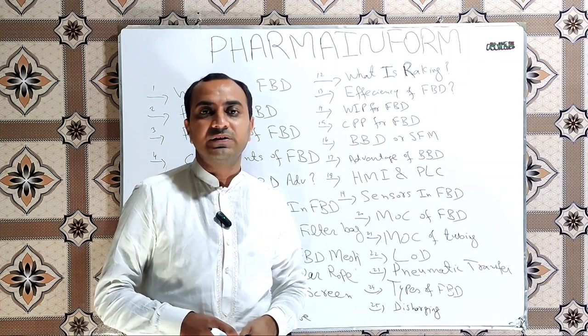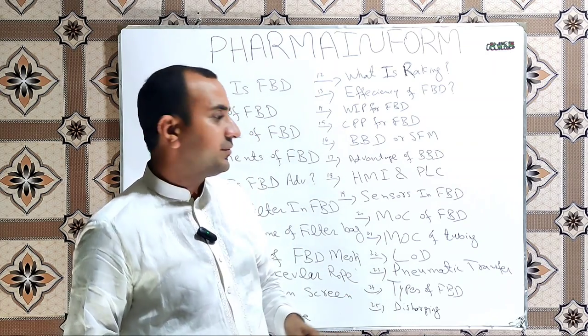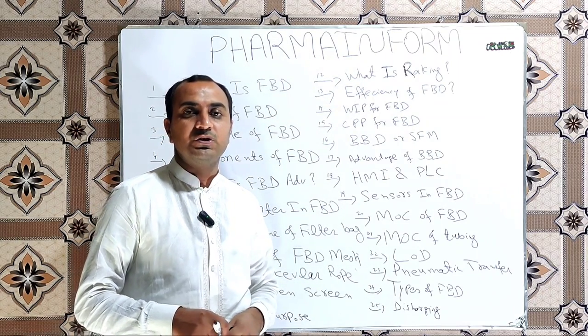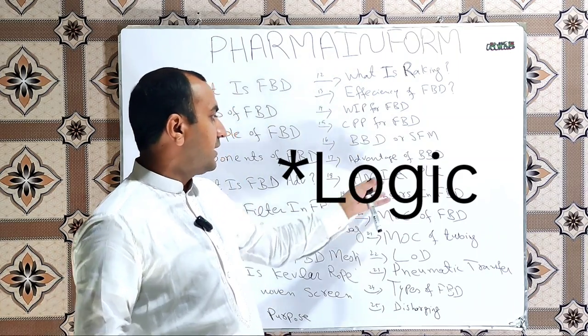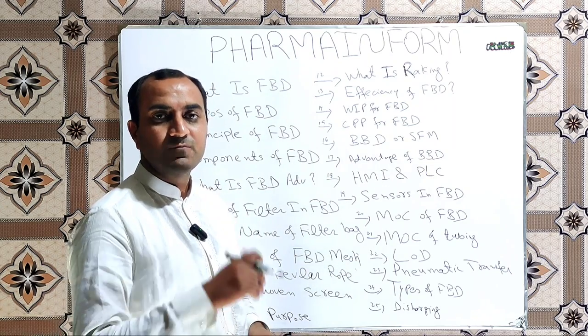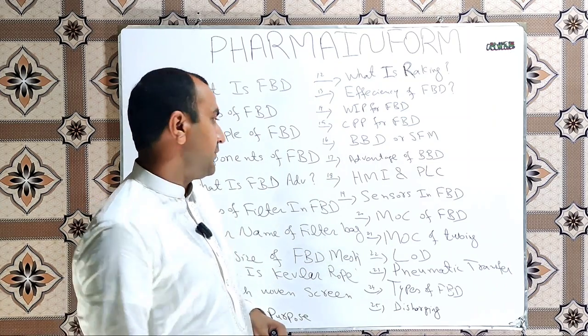What is HMI? HMI is human machine interface and PLC is programmable logical controller. These are the electronic devices which are used to control various functions of the FBD.